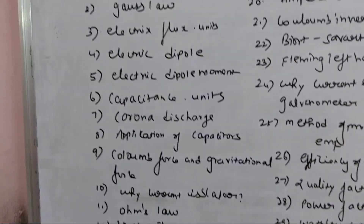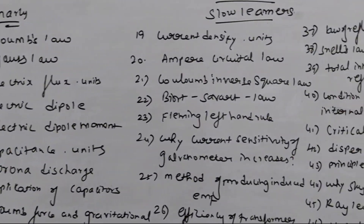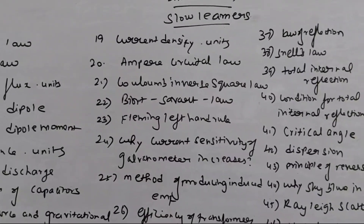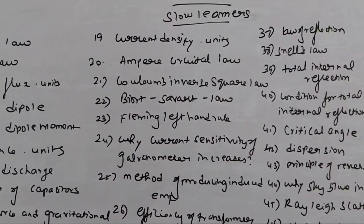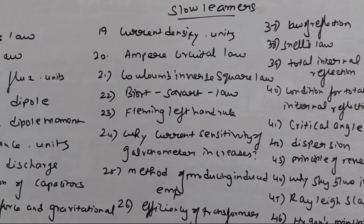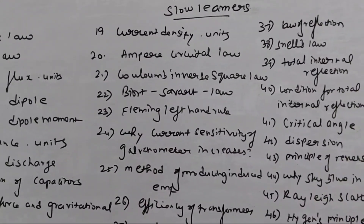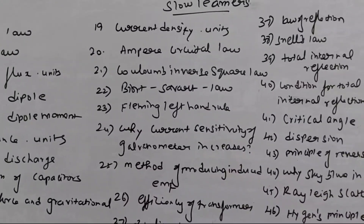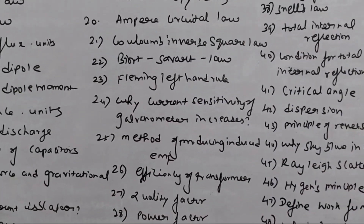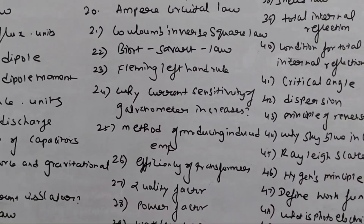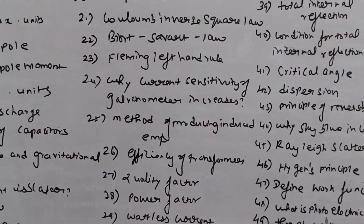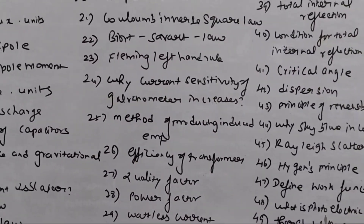That covers all of revision 1st lesson. Define current density — that's number 19. Number 29. Ampere's circuit — number 21. Coulomb inverse square — number 22. Biot's law — number 23. Fleming's left-hand rule. Current sensitivity of galvanometer increases — that's number 6.